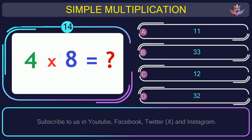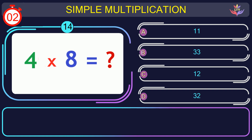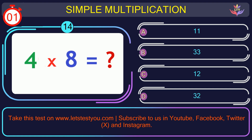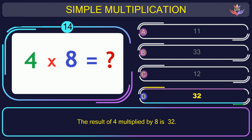Question number 14: could you guess the result when you multiply 4 and 8? The correct answer is option D: 32. The result of 4 multiplied by 8 is 32.